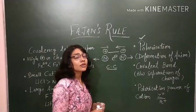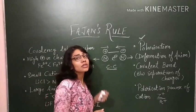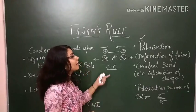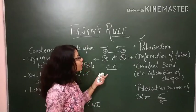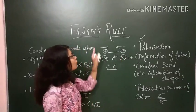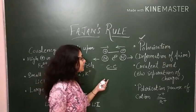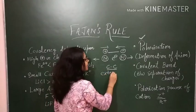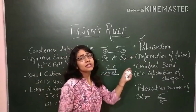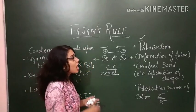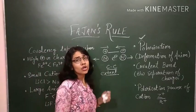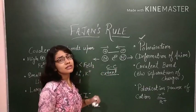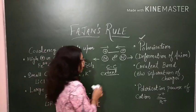Some ionic bonds are 100% ionic, but there are also ionic bonds which contain some covalent character. Fajan's Rule states that the covalent character present in an ionic bond depends on the extent of polarization — that is, how much deformation or distortion of the anion is present.